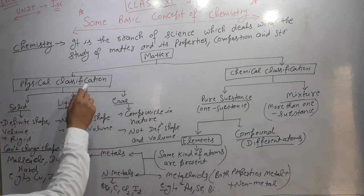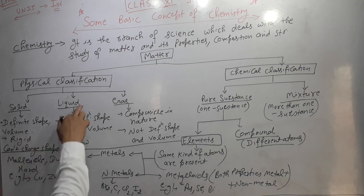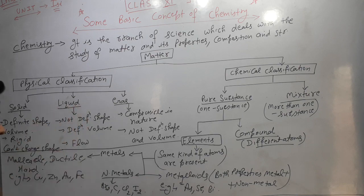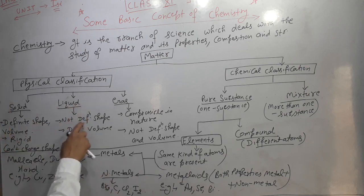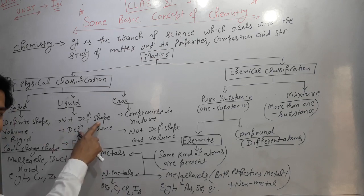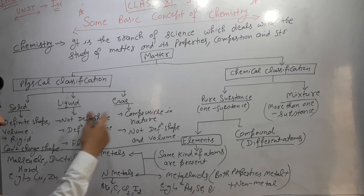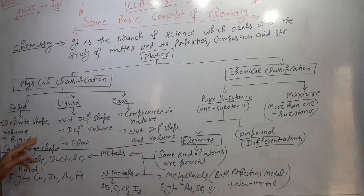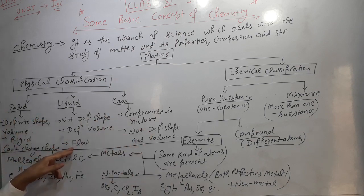The second state in physical classification is liquid. Liquid does not have a definite shape but has definite volume, because liquids occupy the shape of the container in which they are placed. Liquid also has the property of fluidity — they can flow.